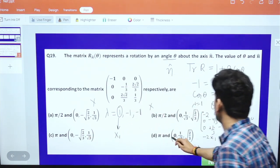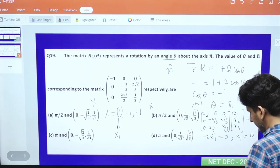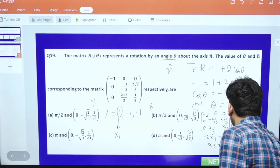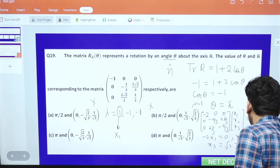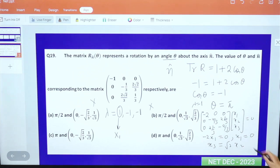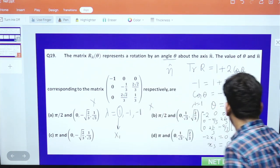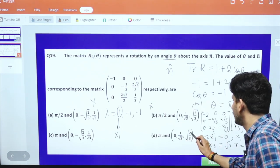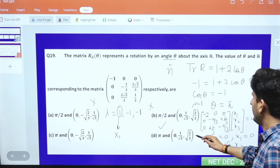The second equation gives x3 equals root 2 times x2. If x2 is positive, then x3 is also positive. This is the answer, and you can verify this is a unit vector.